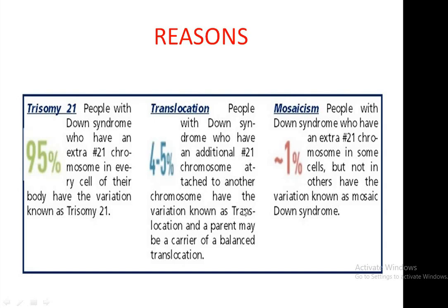Translocation is another type of Down syndrome. Here, people with Down syndrome have an additional chromosome 21 attached to another chromosome — this variation is known as Translocation, and the parent may be a carrier of a balanced translocation. In translocation Down syndrome, a part of chromosome 21 is attached to another chromosome, most commonly chromosome 14. This type of syndrome is seen in about 4 to 5% of cases.